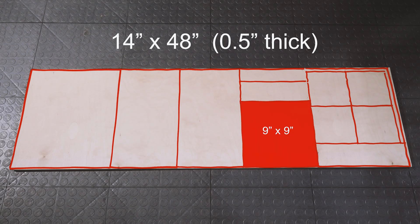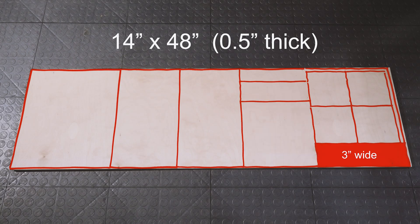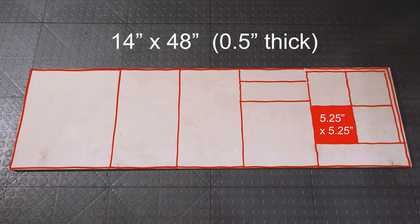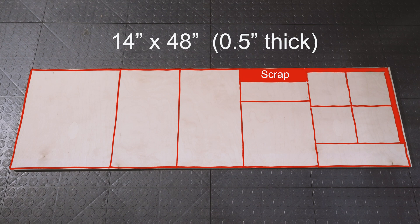Then we'll cut a 9 inch by 9 inch square for the fence and two 3 inch wide strips which we'll cut to length later. Then we'll cut four 5 and a quarter inch squares which will later become our triangle braces, and the rest will become scraps.